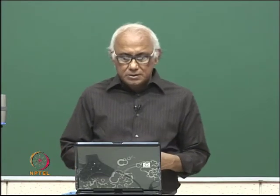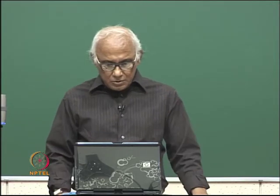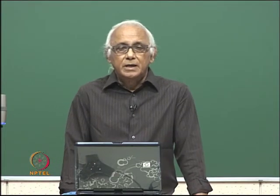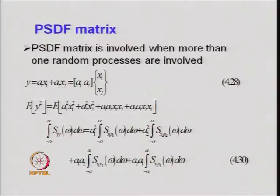In the previous lecture, we discussed the random process and when it becomes a stationary random process. We defined the mean and variance of the ensemble, how a stationary process can be simplified as an ergodic process, then the autocorrelation function, cross correlation function, and the Fourier transform relationship between the power spectral density function and the autocorrelation function — they form a Fourier transform pair. The physical significance of the power spectral density function and cross power spectral density functions were also discussed.